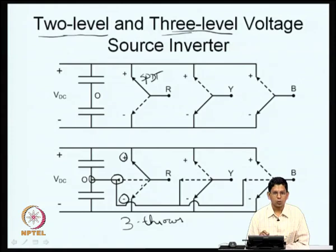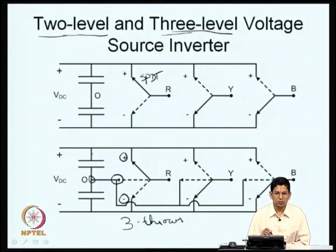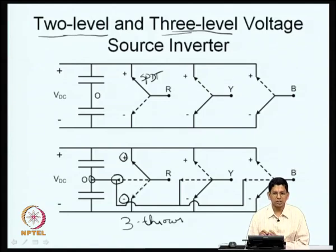This is a three-level voltage source inverter. Whenever you have three levels or above, we use the generic name multilevel voltage source inverter. In this course, when we say multilevel inverter we usually mean a three-level inverter. It is also possible to have a single-pole four-throw switch with four different potentials, or five potentials for a five-level inverter, and so on — these are all multilevel inverters.